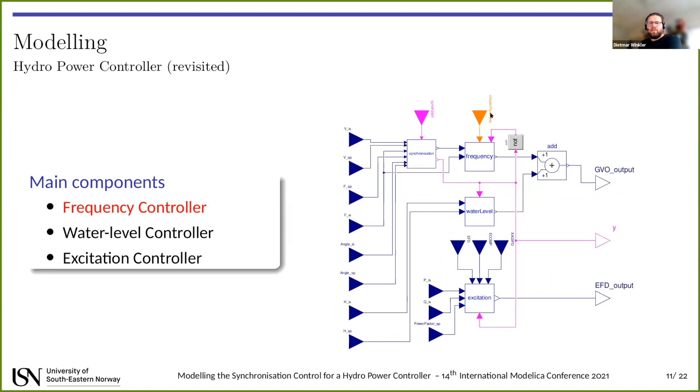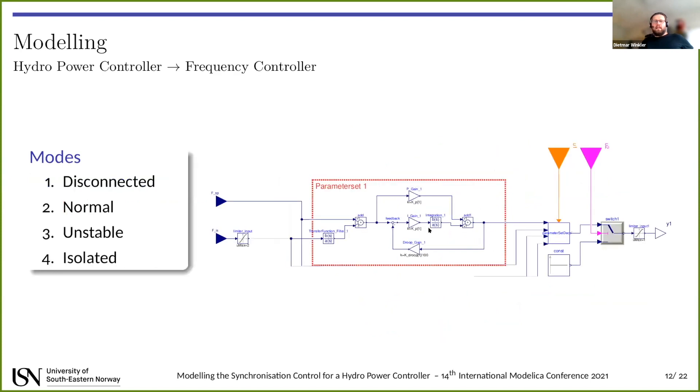The next part inside the hydropower controller is the frequency controller. This frequency controller takes in the synchronization signal and also the frequency and gives out the guide vane opening. It has different modes. Basically the modes are disconnected, normal, unstable, and isolated, depending on how your generator is connected. Is it disconnected? Is it in normal operation? Is it providing an isolated load? Or is it some unstable voltage scenario? The only difference between those different modes is that the internal PI controller, which is this one, has different settings for the gain. So you can switch between the different modes. There are several of those parameter sets implemented. This is just one way to do this. There are always several ways you can do this, but this is how the project has done it.